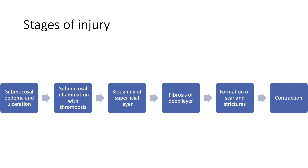After the initial insult from the corrosive agent, the esophagus goes through stages of injury. In the first 24 hours, there is submucosal edema and ulceration. At day 2 to 5, there is inflammation with thrombosis. At day 5, there is sloughing of the superficial layer. After a week, there is formation of fibrous tissue in the deeper layers, forming scars and strictures. At weeks 2 to 5, there is development of contraction throughout the esophagus.